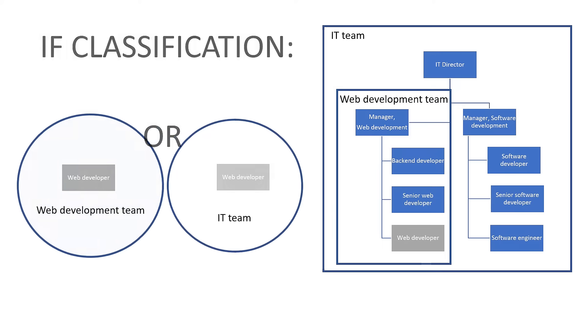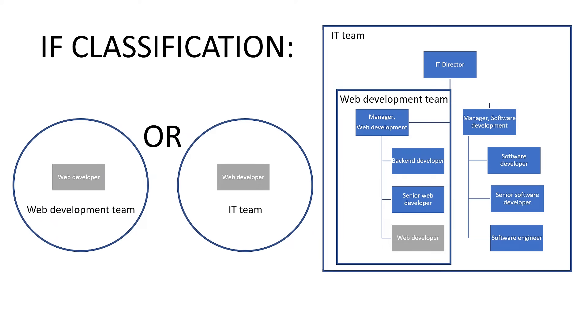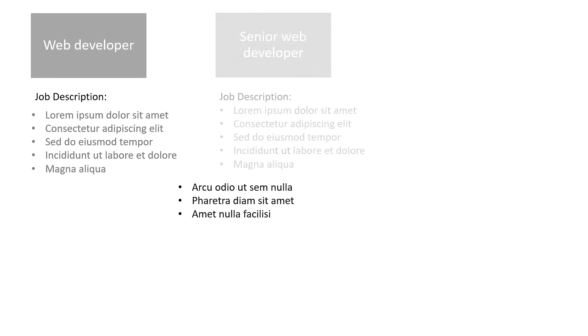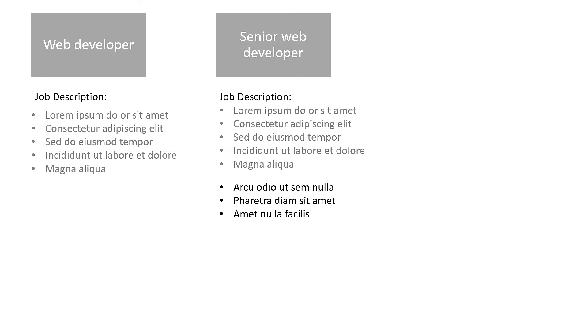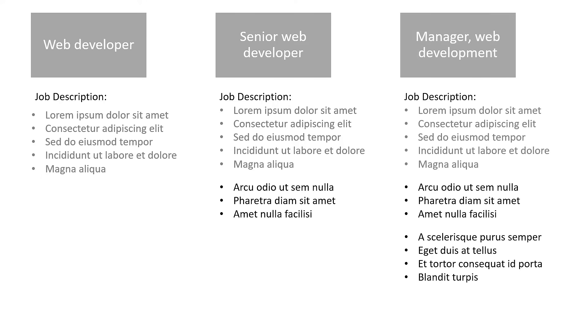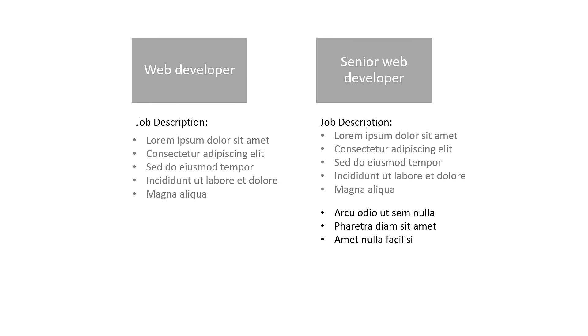If this were a data classification, we could say you're either IT or you're web development. Determining the pay scale for the web developer, on the other hand, would be a classification exercise. Because if we add more responsibilities to the current role, that gets bumped up to a higher role — perhaps a senior web developer. If we add more responsibilities to the senior web developer, then maybe it goes into a management role. As a senior web developer, you would still incorporate the responsibilities of the junior web developer, but you're not both — you're either a junior or a senior web developer. Because of that, and the fact that it follows a hierarchy, this is an example of classification.